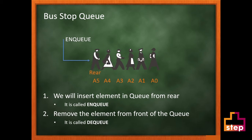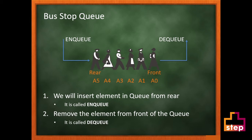This operation is called enqueue. And we always remove the element from the first index, which is also called the front. This operation is called dequeue.